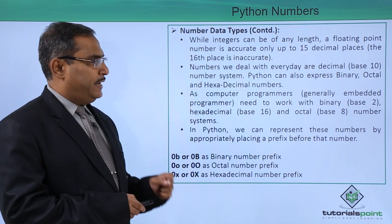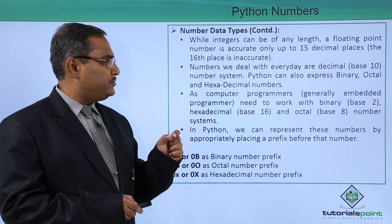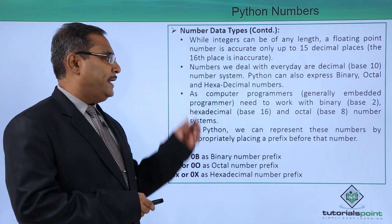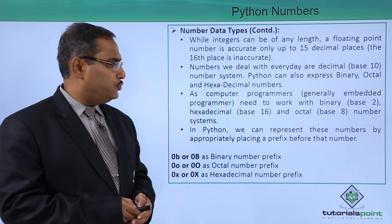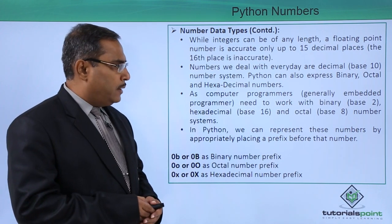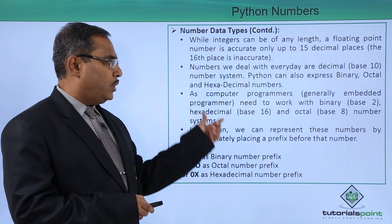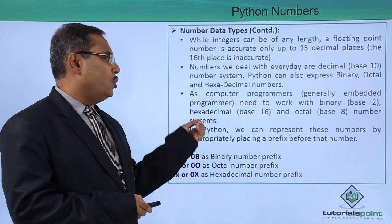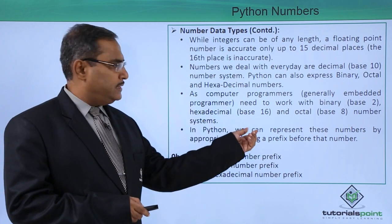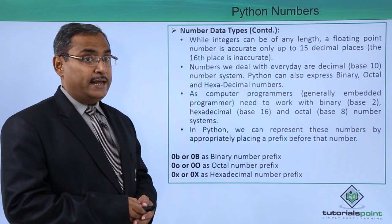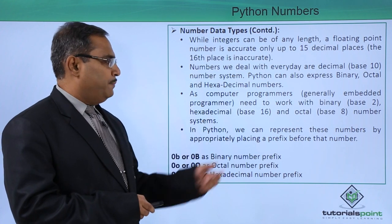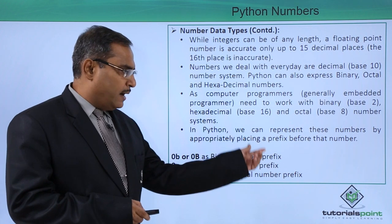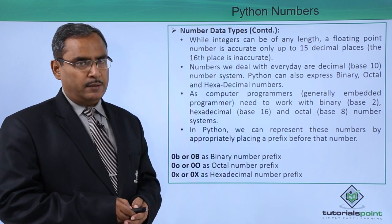Numbers we deal with every day are decimal, that is the base 10 number system. Python can also express binary, octal, and hexadecimal numbers. Computer programmers, generally embedded programmers, need to work with binary. The binary number system has base 2, hexadecimal has base 16, and octal has base 8. In Python, we can represent these numbers by appropriately placing a prefix before that number.